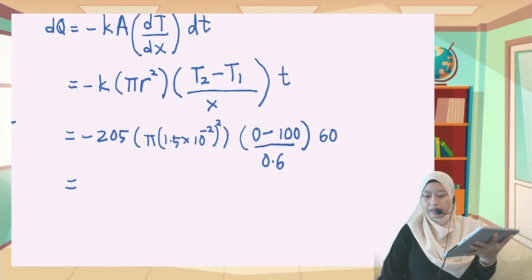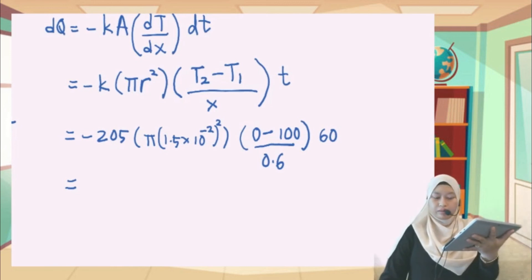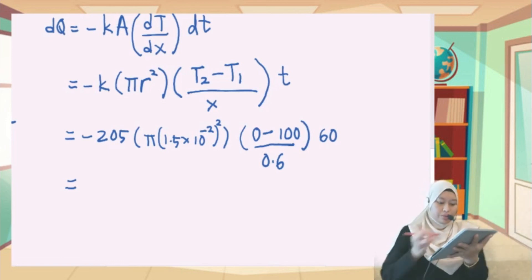So 205 times pi times 1.5 times 10 to minus 2 squared times 100 times 60 divided by 0.6. So we've got 1449.2.